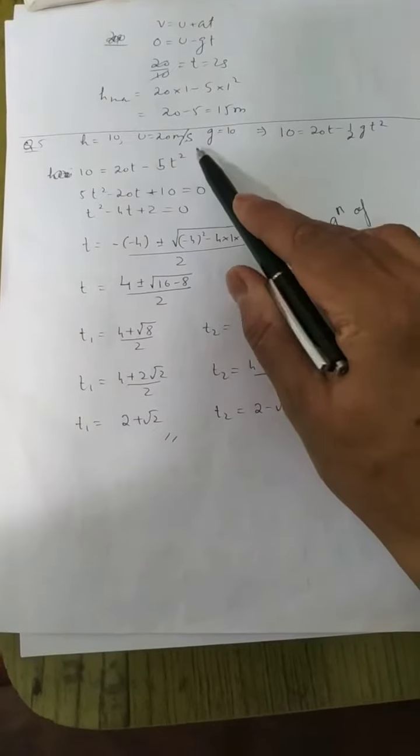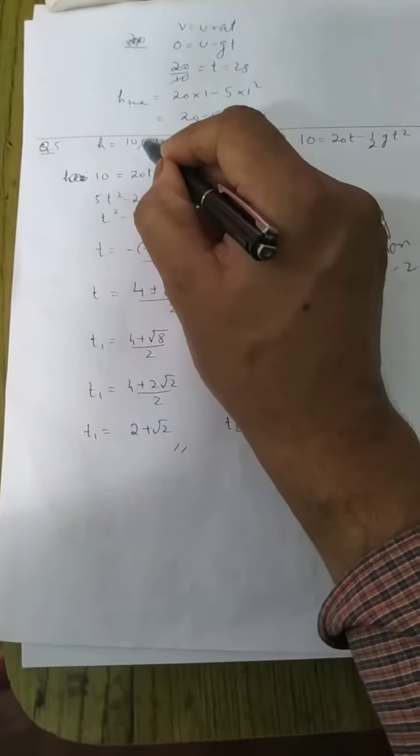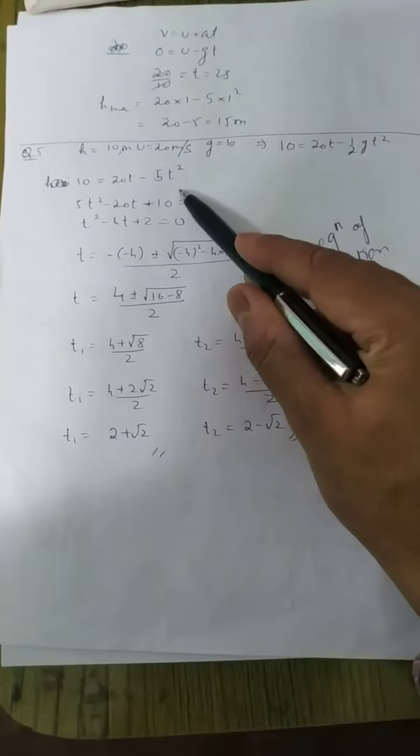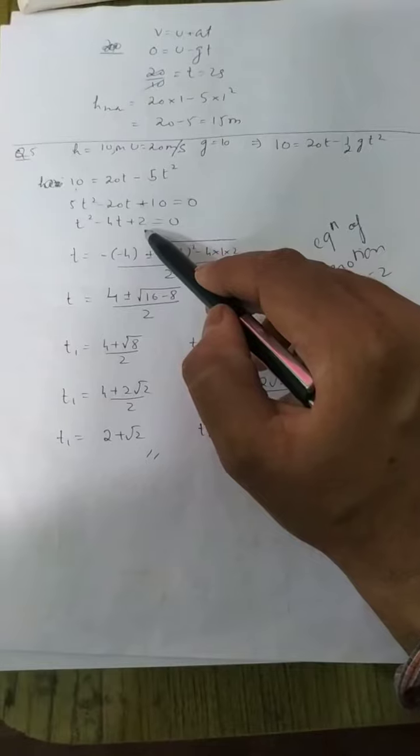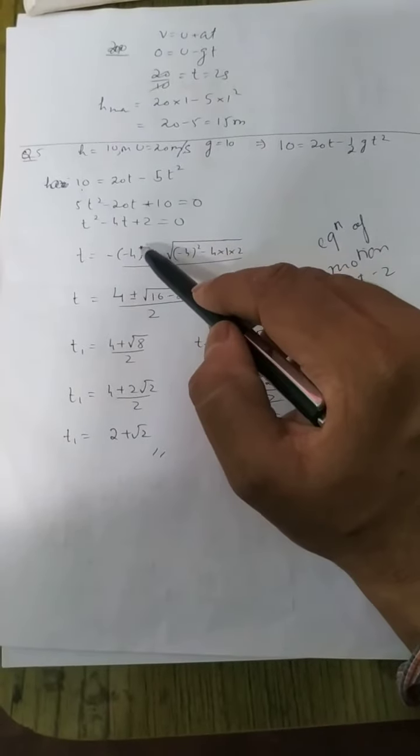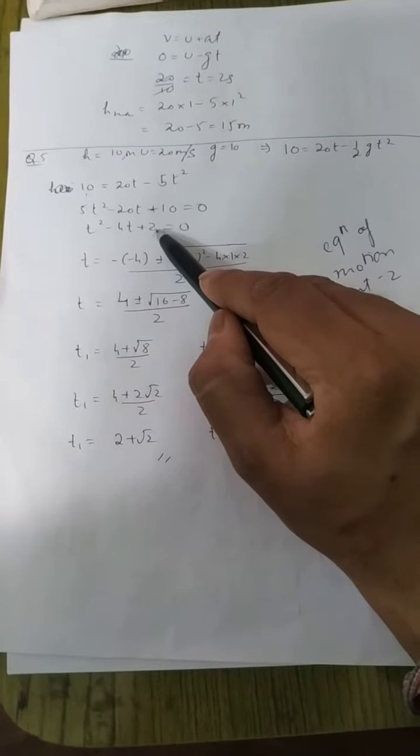Here you can see that the value of h - I am using 10 meters in the question, but in the video I took the value of h as 100 meters, and that makes this term over here as 20, whereas it should be 2.